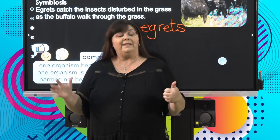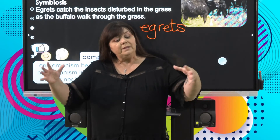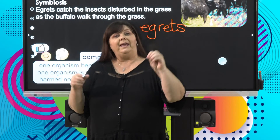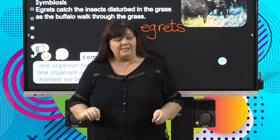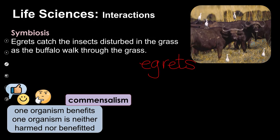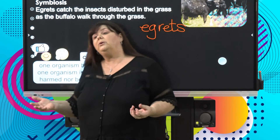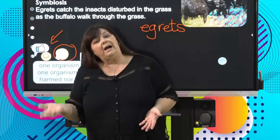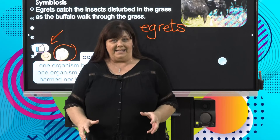The egrets follow these animals that disturb insects, allowing the egrets to pick them off. What about the buffalo? Frankly, the buffalo doesn't care — it's not helping the buffalo, it's also not harming the buffalo. So we have one organism, the egret, thumbs up; the other organism is 'whatever' — not harmed, not benefited. That is commensalism.